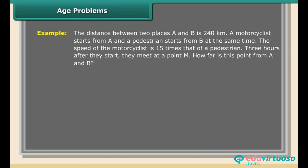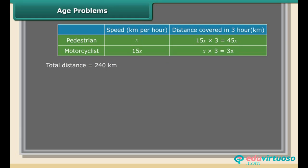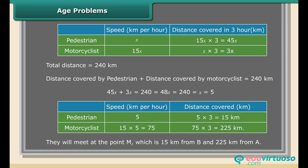Distance problem. The distance between places A and B is 240 km. A motorcyclist starts from A and a pedestrian starts from B at the same time. The speed of the motorcyclist is 15 times that of the pedestrian. After 3 hours they meet at point M. Let the pedestrian's speed be x km/h. Distance covered by pedestrian + distance covered by motorcyclist = 240 km; 3x + 45x = 240; 48x = 240; x = 5. They meet at point M, which is 15 km from B and 225 km from A.